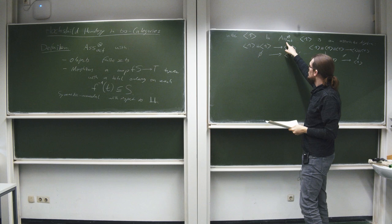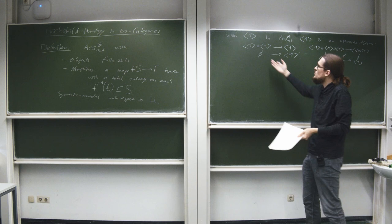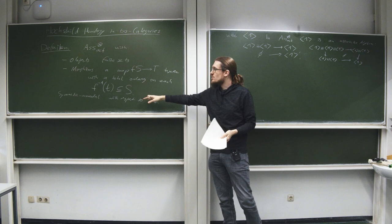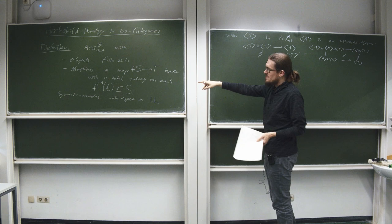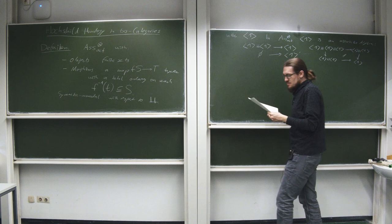In some sense this symmetric monoidal category behaves like it's the free symmetric monoidal category on one algebra object. We need a unit and an algebra object, but all the other objects are simply disjoint unions — they're obtained by the monoidal structure from this algebra object. All the maps simply correspond to all the ways you can multiply together copies of an algebra object. So with that in mind we make the following definition.